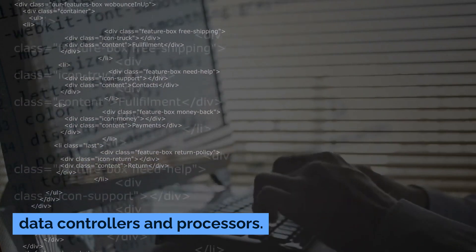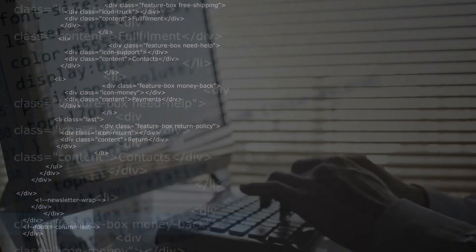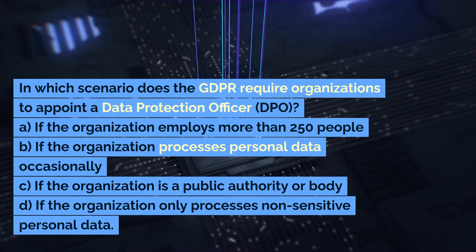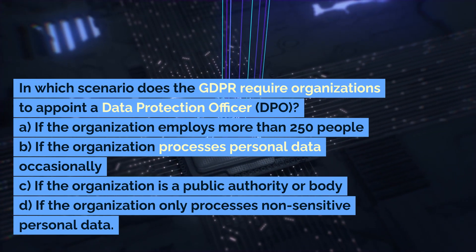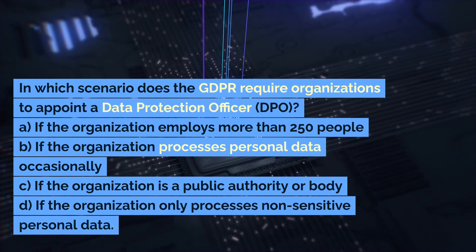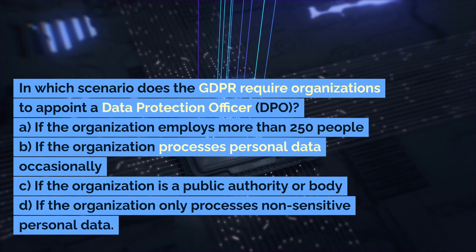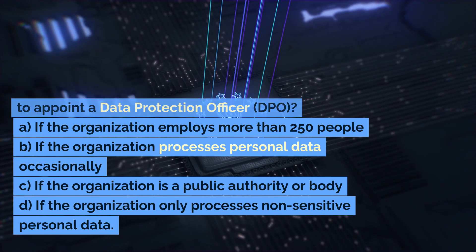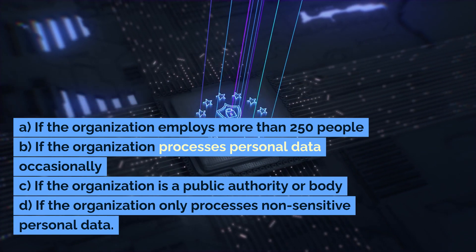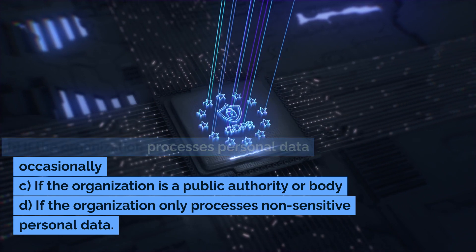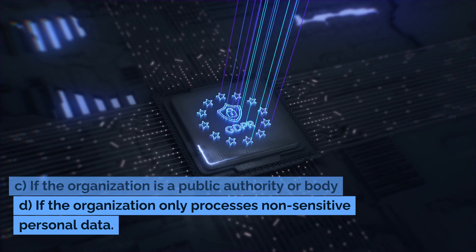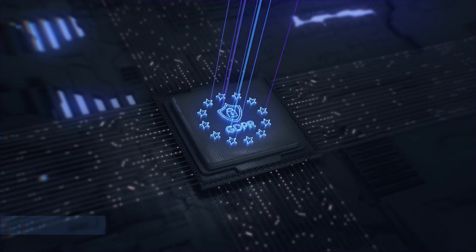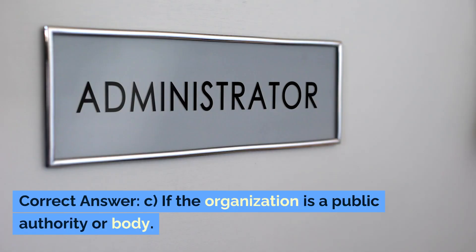In which scenario does the GDPR require organizations to appoint a data protection officer (DPO)? A. If the organization employs more than 250 people. B. If the organization processes personal data occasionally. C. If the organization is a public authority or body. D. If the organization only processes non-sensitive personal data. Correct answer: C. If the organization is a public authority or body.